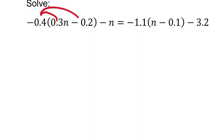Negative 0.4 times 0.3 will be negative 0.12n. And then negative 0.4 times negative 0.2, that's going to be a positive 0.08. I'm showing the first zero there in the front. You don't have to if you don't want to. And then it still has the minus n there that's on the left.